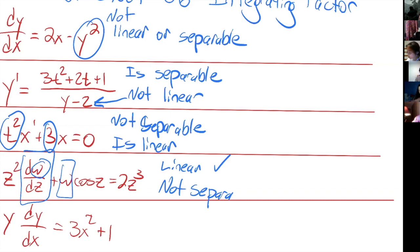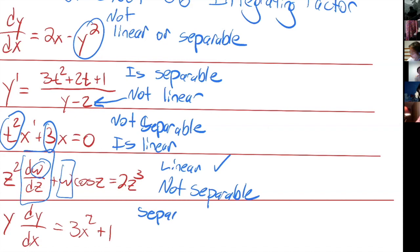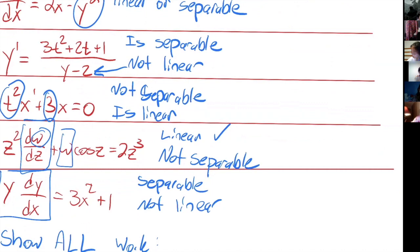A student mentions getting some of these wrong on the first homework because they didn't understand the concept since it hadn't been covered in class yet. The instructor explains it was in the reading material and the problem included a note to check the introduction. Now reviewing it together since it was on the homework. The last one is separable but not linear because we have y being multiplied by y-prime.